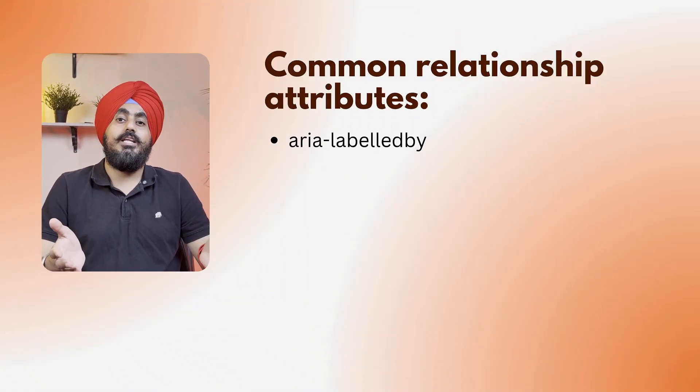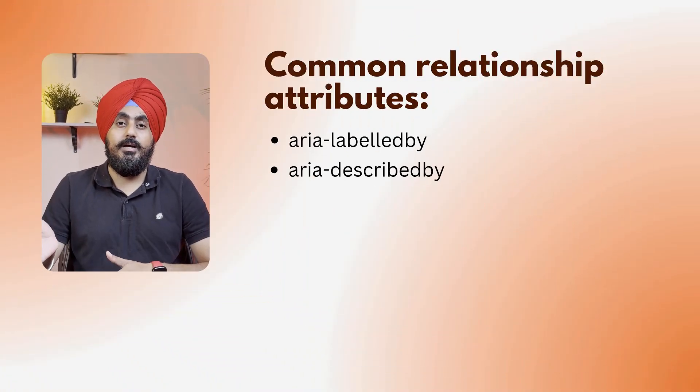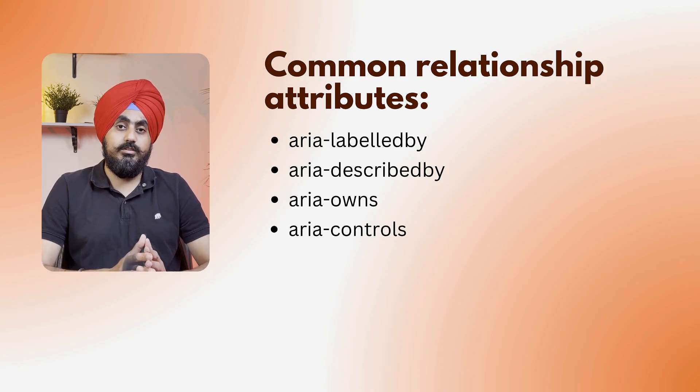Next, we have relationship attributes, which define how elements relate to one another. Use aria-labelledby, aria-describedby, aria-owns, or aria-controls. For example, when using aria-describedby='email-help', a screen reader will read the input's label plus the helpful description.